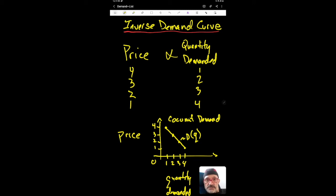You should be sure to interpret the inverse demand curve as a price of 3 causes quantity demanded to be 2.